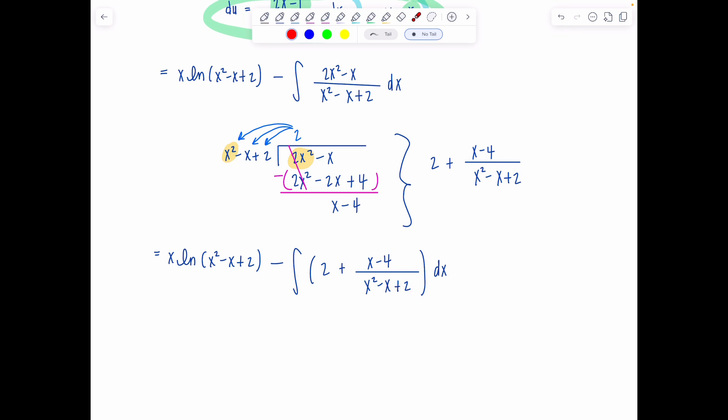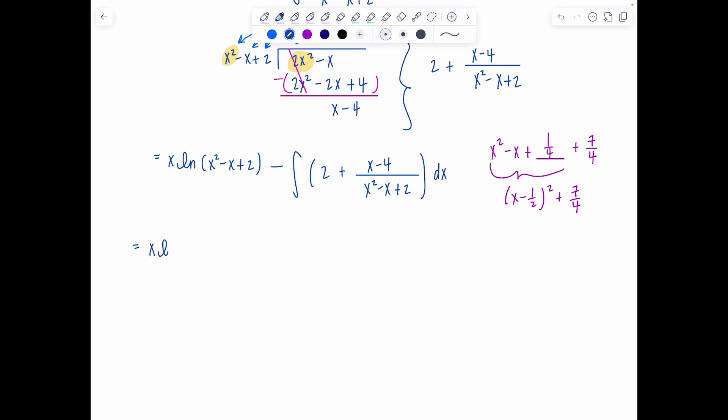So in order to complete the square in the denominator, we need to make it a perfect square trinomial. So x squared minus x plus, what would I need to have a perfect square trinomial? Take the coefficient on x, divide it by 2, and then square it, I would need a one-fourth. Well, do I have that? Kind of. Here's 2, which is eight-fourths. So if I steal one-fourth from 2, it's now seven-fourths. Then this will factor into x minus one-half quantity squared plus seven-fourths. So we've got x natural log x squared minus x plus two minus integral. Two plus x minus four over x minus one-half quantity squared plus seven over four dx.